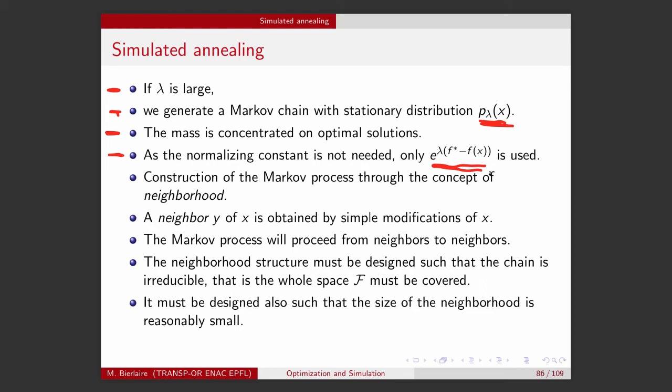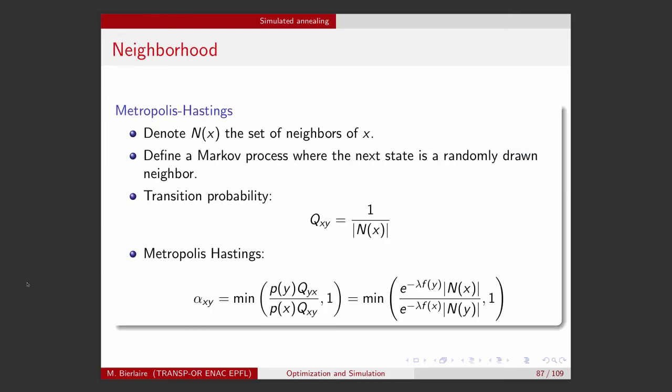This Markov process, characterized by Q in the previous part of the lecture, proceeds from neighbor to neighbor to visit the space. The same recommendations apply: the neighborhood structure must be designed well, the chain must be irreducible — we need to be able to reach any state — and it must be sufficiently fast and sufficiently slow, as discussed before. Everything else is the same, and now we can apply Metropolis-Hastings.